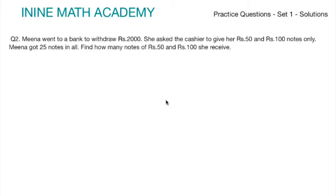Let us look at question number 2 in practice questions set 1. Let us understand the question first. Meena went to a bank to withdraw rupees 2000. She asked the cashier to give rupees 50 and rupees 100 notes only. Meena got 25 notes in all. We need to find how many notes of rupees 50 and rupees 100 she received. It is like this.